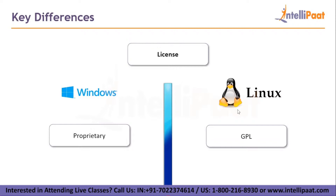Regarding license: Windows comes under a proprietary commercial license, meaning distribution, modification and sharing of the software is not allowed — it is closed source software. Linux comes under the General Public License — it is open source, with source code made available to the public that accepts modifications and contributions. The default UI for Windows is the Windows shell. Since Linux is based on the Unix operating system, it uses the Unix shell.